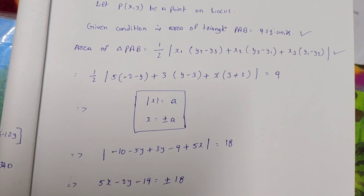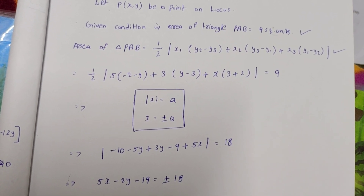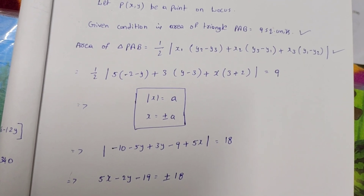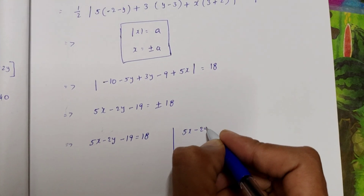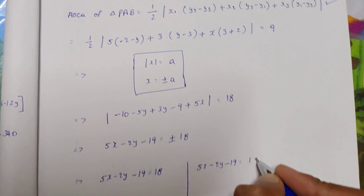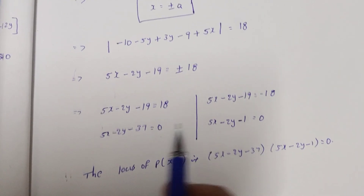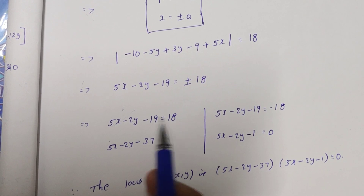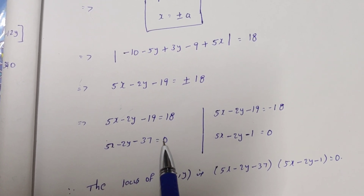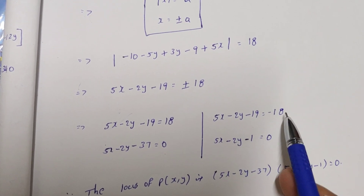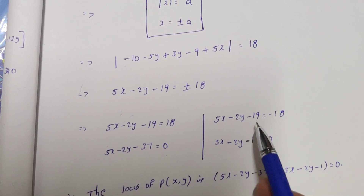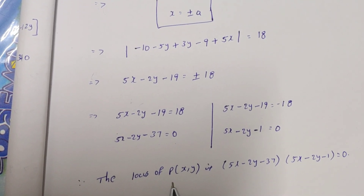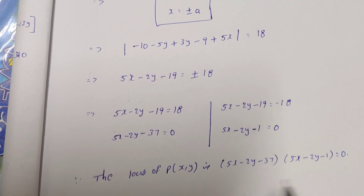Two equations result: 5x minus 2y minus 19 equals 18 gives 5x minus 2y minus 37 equals 0. And 5x minus 2y minus 19 equals minus 18 gives 5x minus 2y minus 1 equals 0. So the locus of P(x,y) is these two equations.